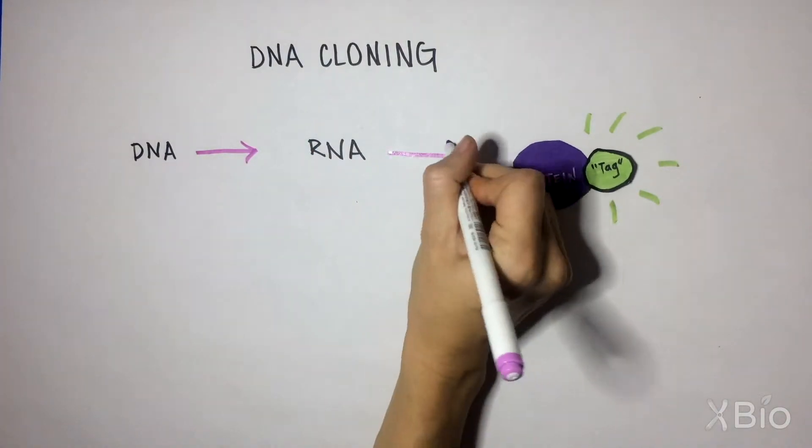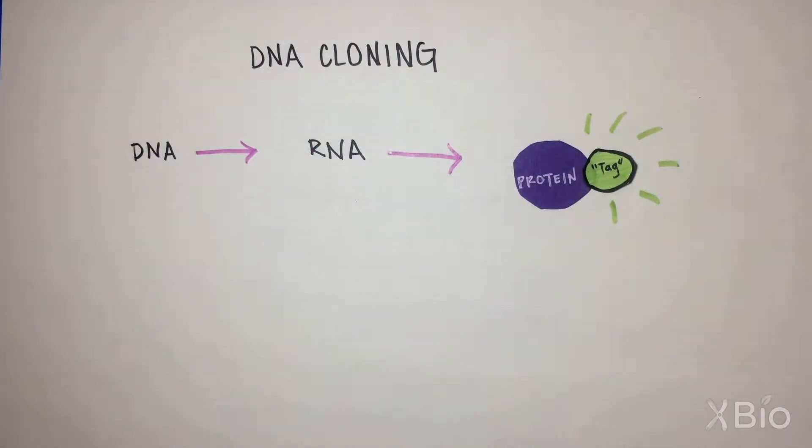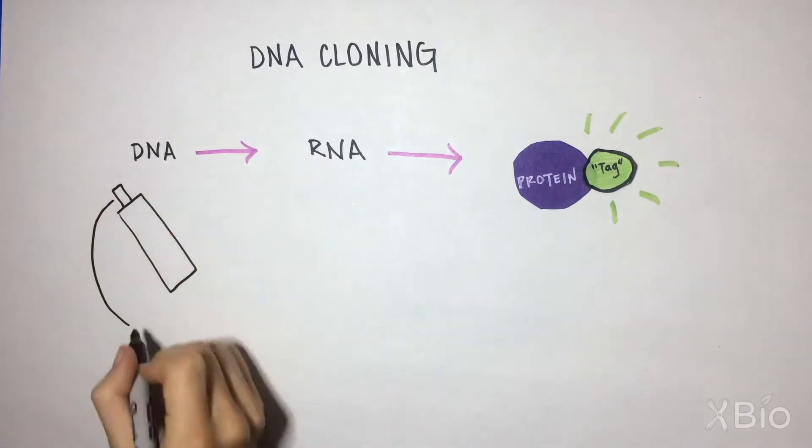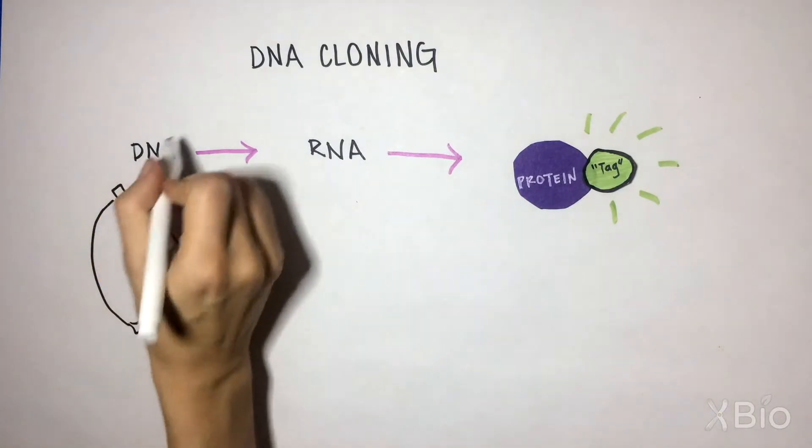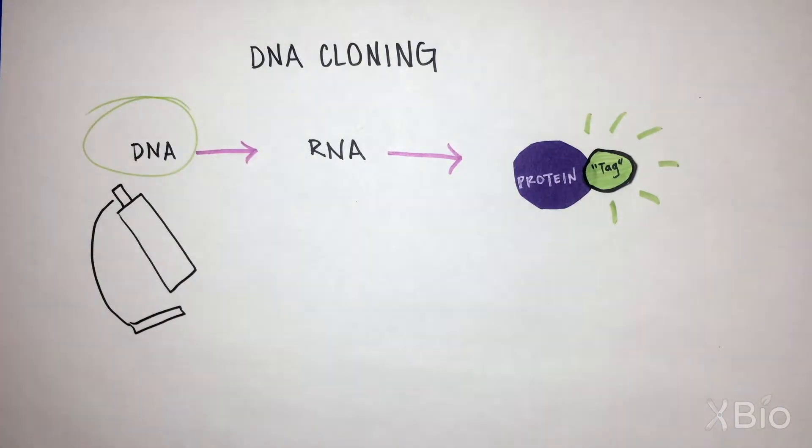Remember the central dogma in biology: DNA encodes RNA encodes protein, so whichever type of macromolecule needs to be studied, it is originally expressed from DNA. That is why we clone at the DNA level.